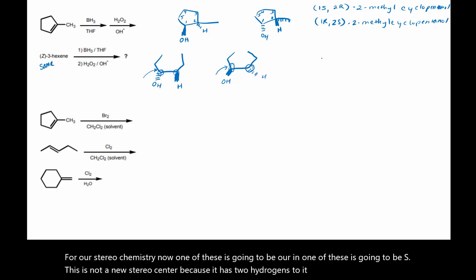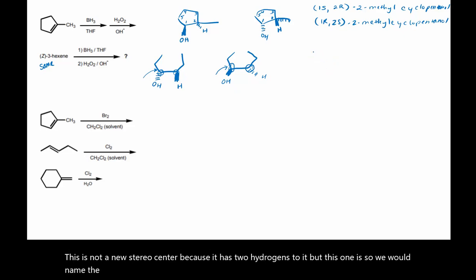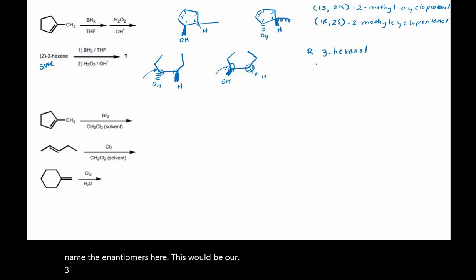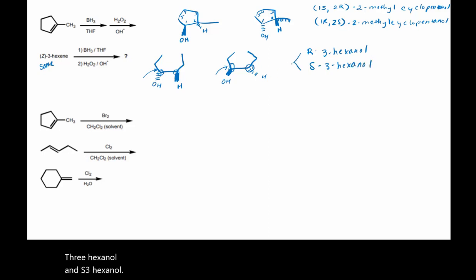This is not a new stereocenter because it has two hydrogens, but this one is. So we would name the enantiomers here. This would be R-3-hexanol and S-3-hexanol. So those are the products of this reaction.